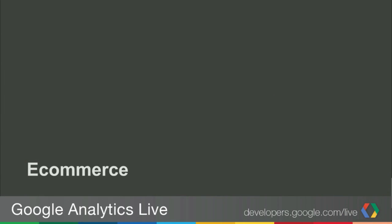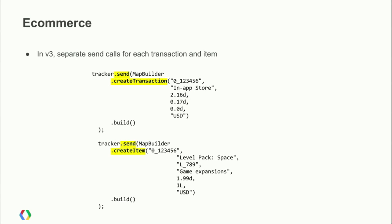E-commerce in v3 has a small but important change. Previously you'd create a transaction object, add items, and send it all in one hit. In v3, you need to make separate send calls for each transaction and each item. Use MapBuilder — call createTransaction, fill in the details, build it, send it, then do the same for each item. Make sure the transaction ID in each item matches the transaction ID used in the transaction hit.